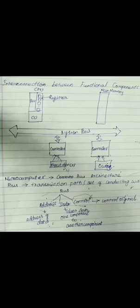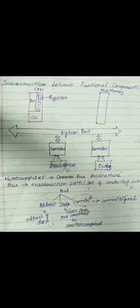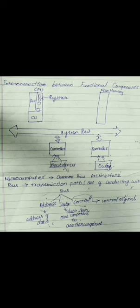Good morning to all. Today's topic is interconnection between functional components. Before going to this interconnection between functional components, we will have a small recap of functional components of CPU. As already discussed in the first class, there are four units which will be present, acting as functional components of a computer: input unit, output unit, memory unit, and CPU.